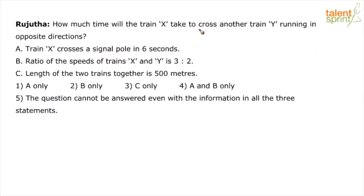How much time will train X take to cross another train Y running in opposite directions? Basically, we have to find out the time that train X would take to cross another train Y running in opposite directions. As you can see, this is a question from data sufficiency. It's a data sufficiency based question because three statements have been given and we have to find out which of these statements is enough to arrive at the answer.